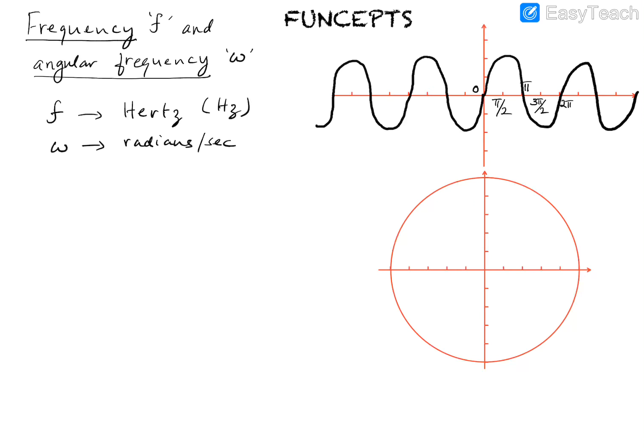Today we will discuss the mathematical relationship between Omega and f. The relationship is: Omega equals two pi times f. We will also explore what this means and how it simplifies the visualization and interpretation of frequency by using the angular frequency rather than the frequency in Hertz.